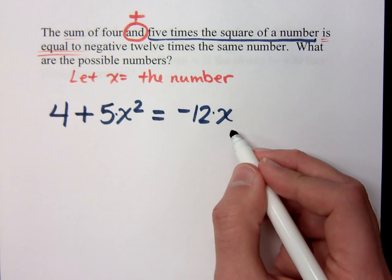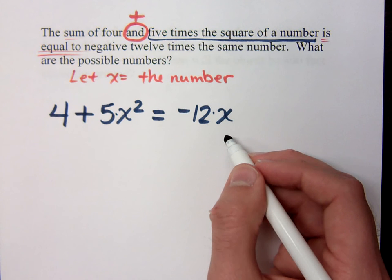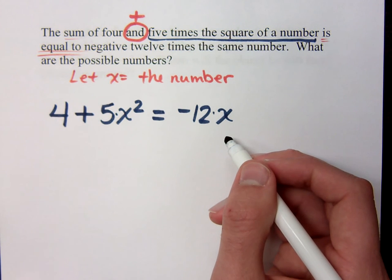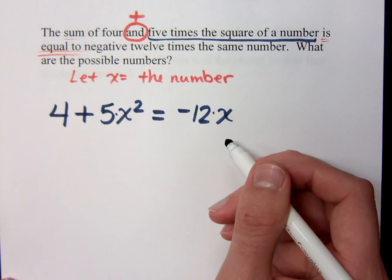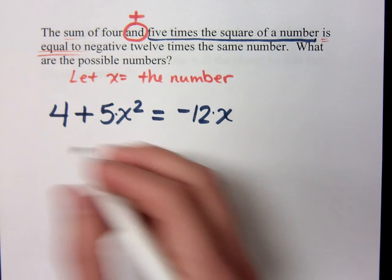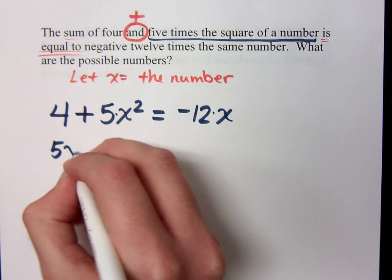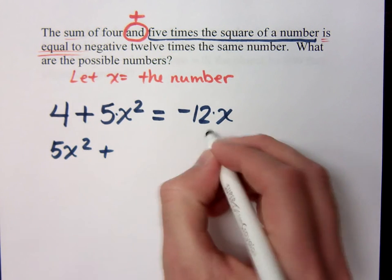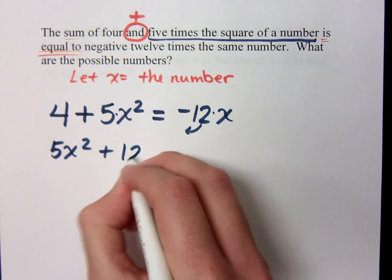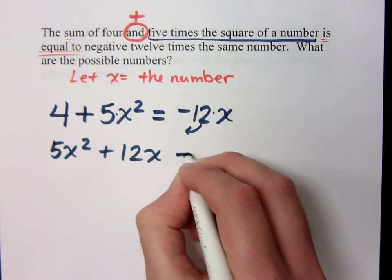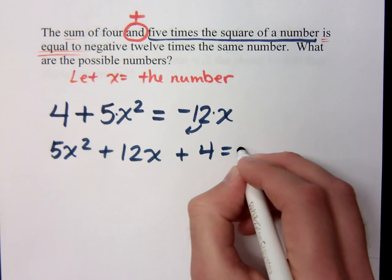Now, notice this is a quadratic equation. So that means I need to get everything to one side. And when I do that, I also want to make sure that my terms are written in descending order. So when I do that, I have 5x² + 12x + 4 = 0.